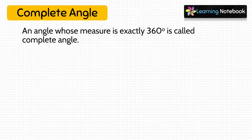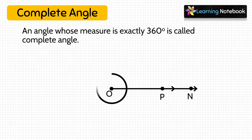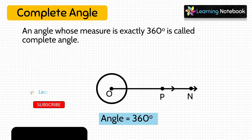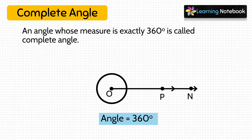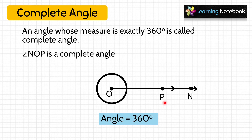The last type of angle is complete angle. An angle whose measure is exactly 360 degrees is called a complete angle, or we can also call it a full angle. Angle PON — or we can call it NOP — is a complete angle because it measures exactly 360 degrees.